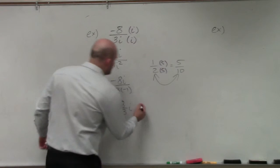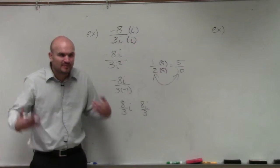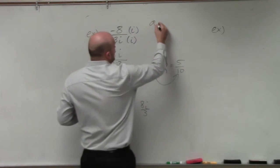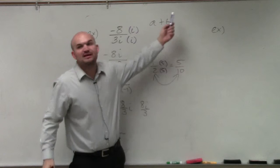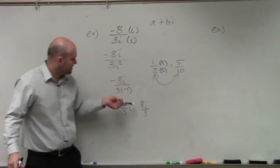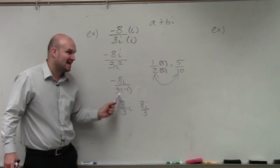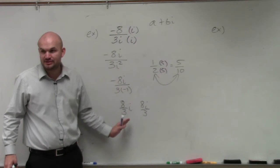Yes, you could also write that as 8i over 3. Right? That's the same thing. But just remember when we're talking about complex numbers, we like a plus bi. So we want to know what is the real number that's being multiplied by i. So rather than keeping it as 8i over 3, I'm just going to rewrite it as 8 thirds i. It's the same thing. It's just another way to write the answer.